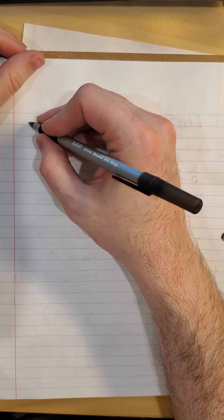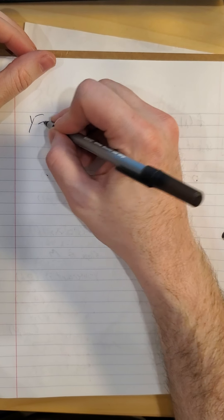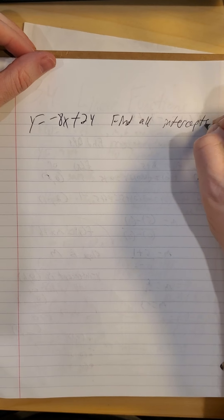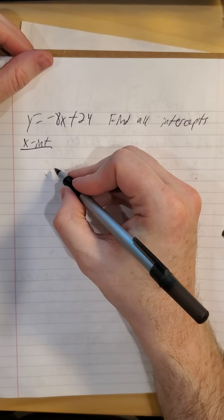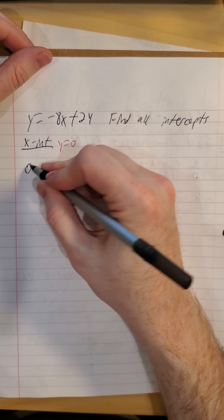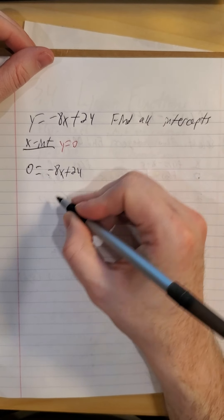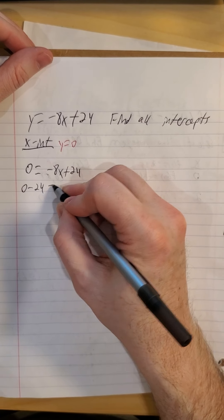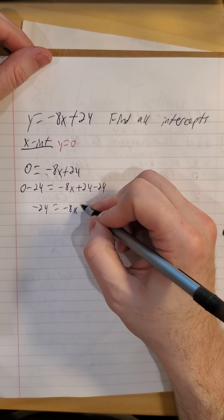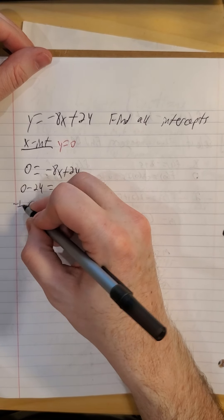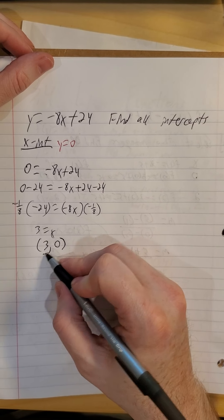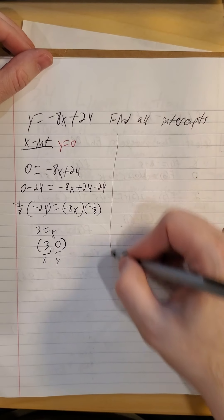All right, so let's play with one this time not written in function notation. Let's look at y is negative 8x plus 24. Find all intercepts. So if I'm asked to find the x-intercept, automatically I know, even though they're not going to write it down for me, y must be a 0. So 0 is equal to negative 8 times x plus 24. And then we're just solving linear equations again. So we're subtracting 24 on both sides. So negative 24 is negative 8x. So we'll multiply both sides by negative 1 eighth. So 3 is equal to x. So 3 comma 0, careful with your order there, x first, then y. That's our x-intercept.